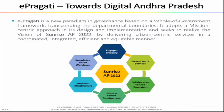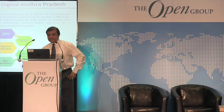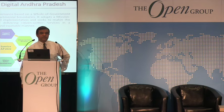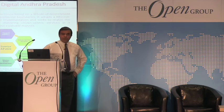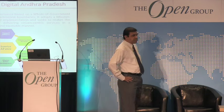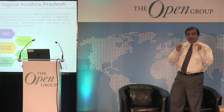ePragati — a new paradigm in governance based on a whole-of-government framework — transcends departmental boundaries and adopts a mission-centric approach in design and implementation. It seeks to realize the vision of Sunrise AP 2022, based on six pillars or focus areas for the state. The state has a vision to be a developed state by UN standards by 2029, so the goal is very clearly established. That's a key success factor for enterprise architects: don't have ambiguous goals. Set the goal that matters.